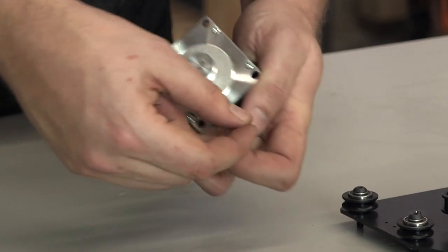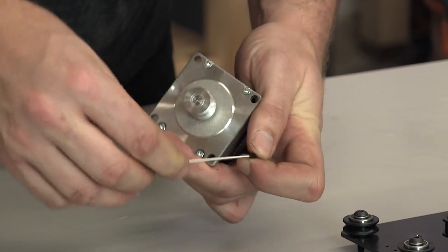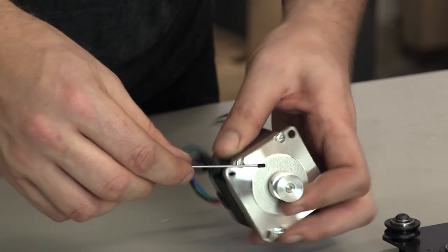You won't need to get these screws much more than finger tight for this step. We'll be adjusting the placement of the pulley on the motor shaft later.